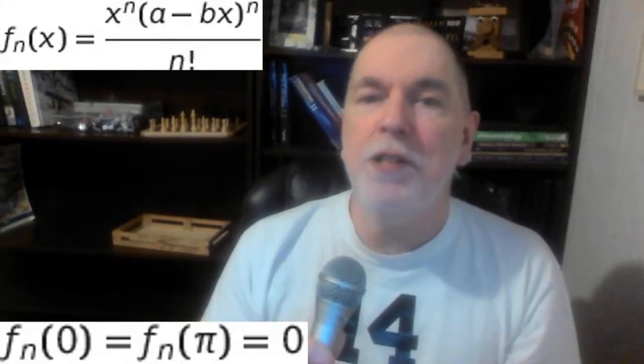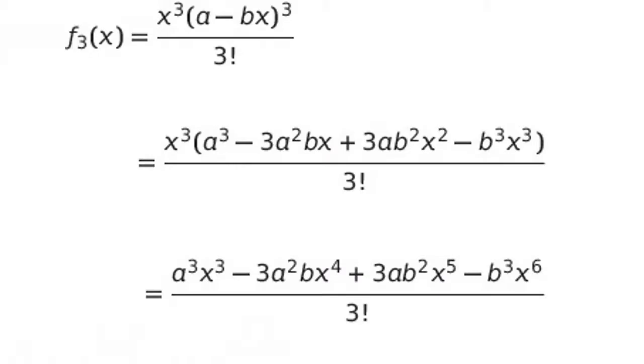To see why, let's see what this function looks like for n equals three. When we unravel it, we see that in the numerator we have a polynomial function where the exponent on x is three and higher. As we take derivatives, this could quickly become very messy, but we have a trick to keep it in line. Because the exponent on x is always three or higher, when we take the derivatives, we can ignore the x with the larger exponents.